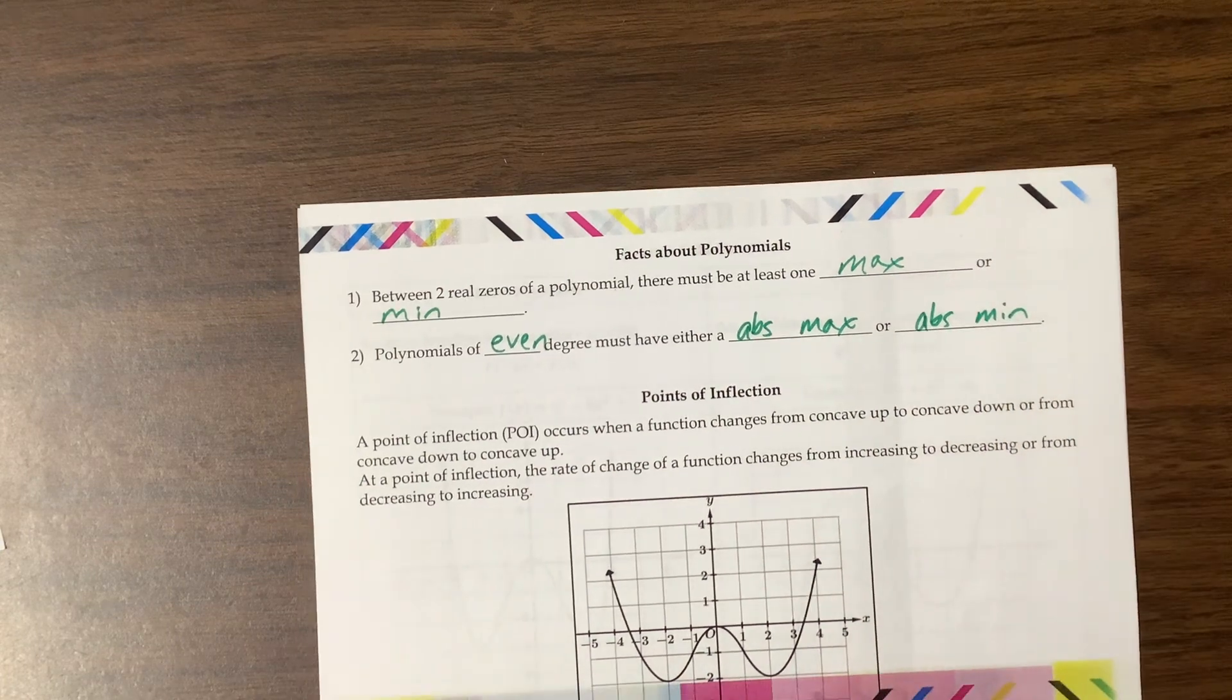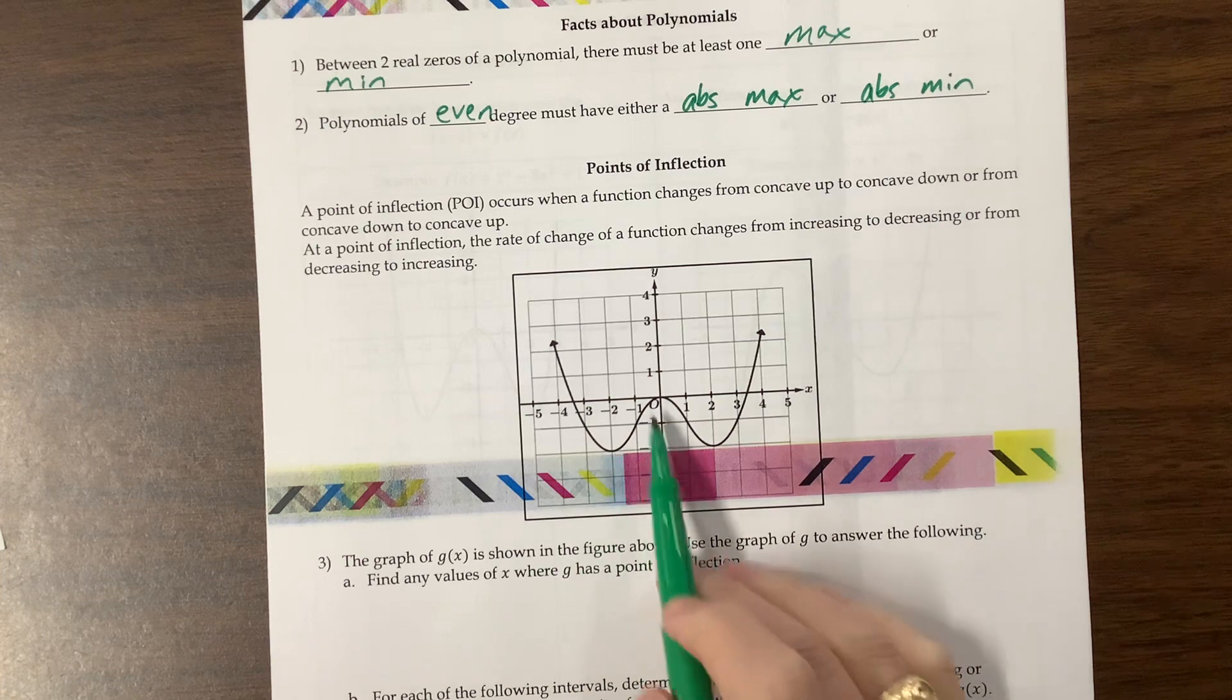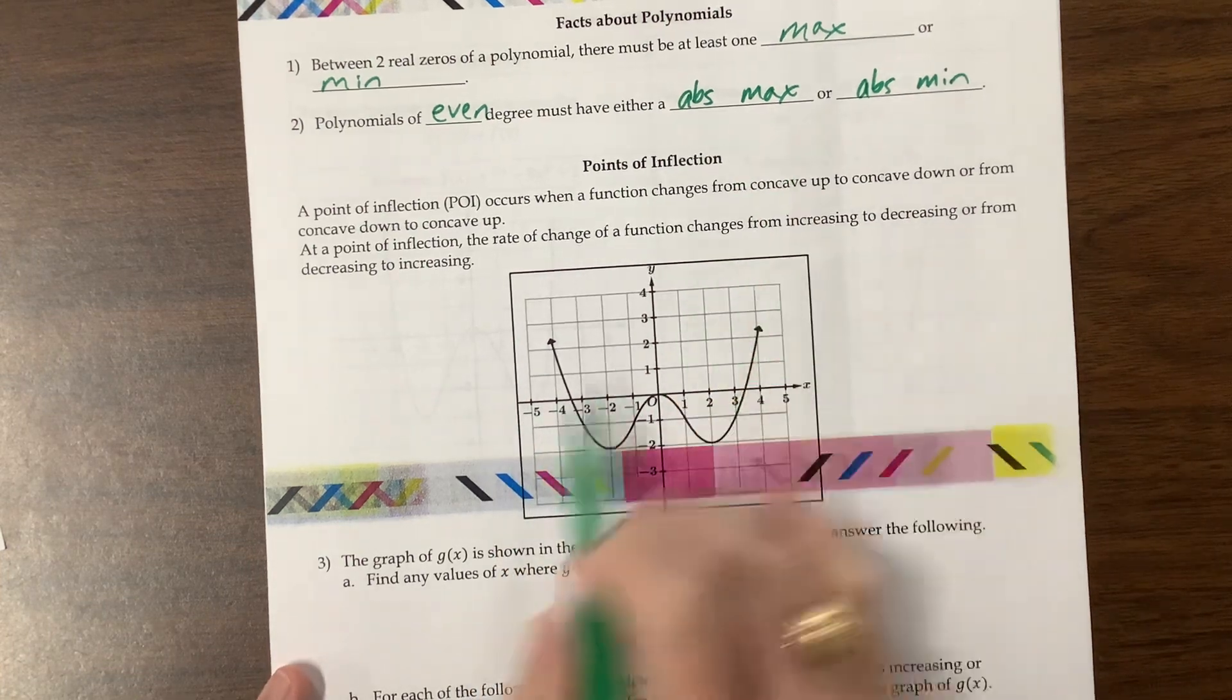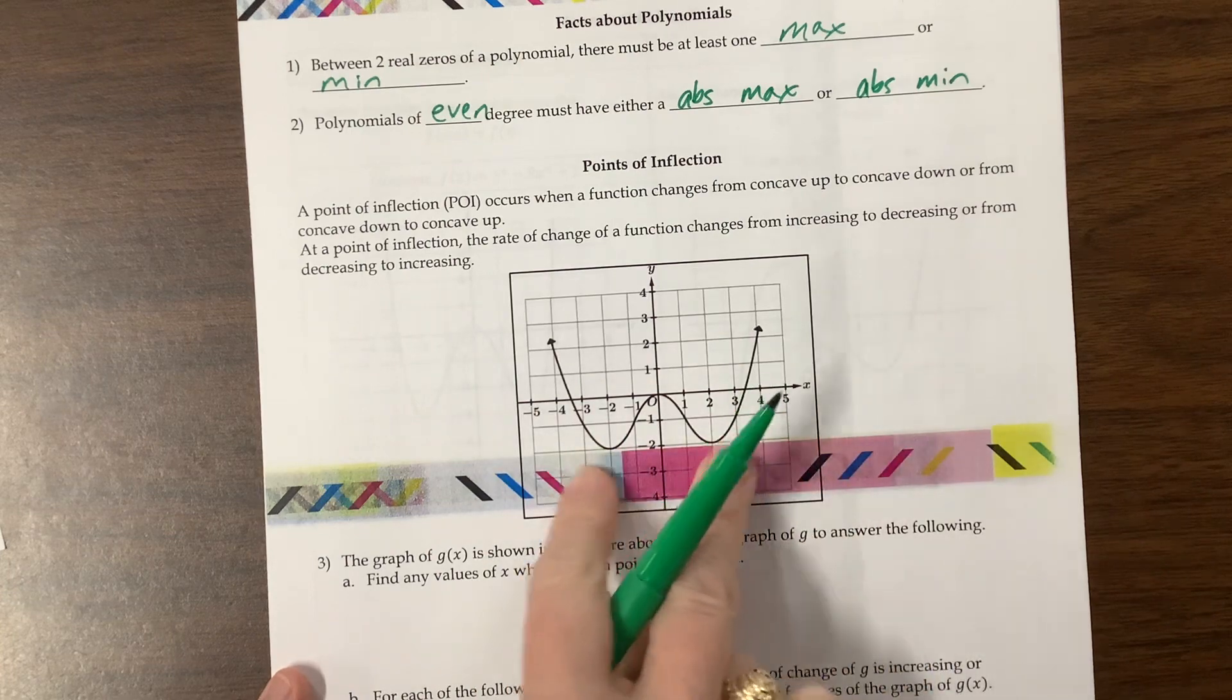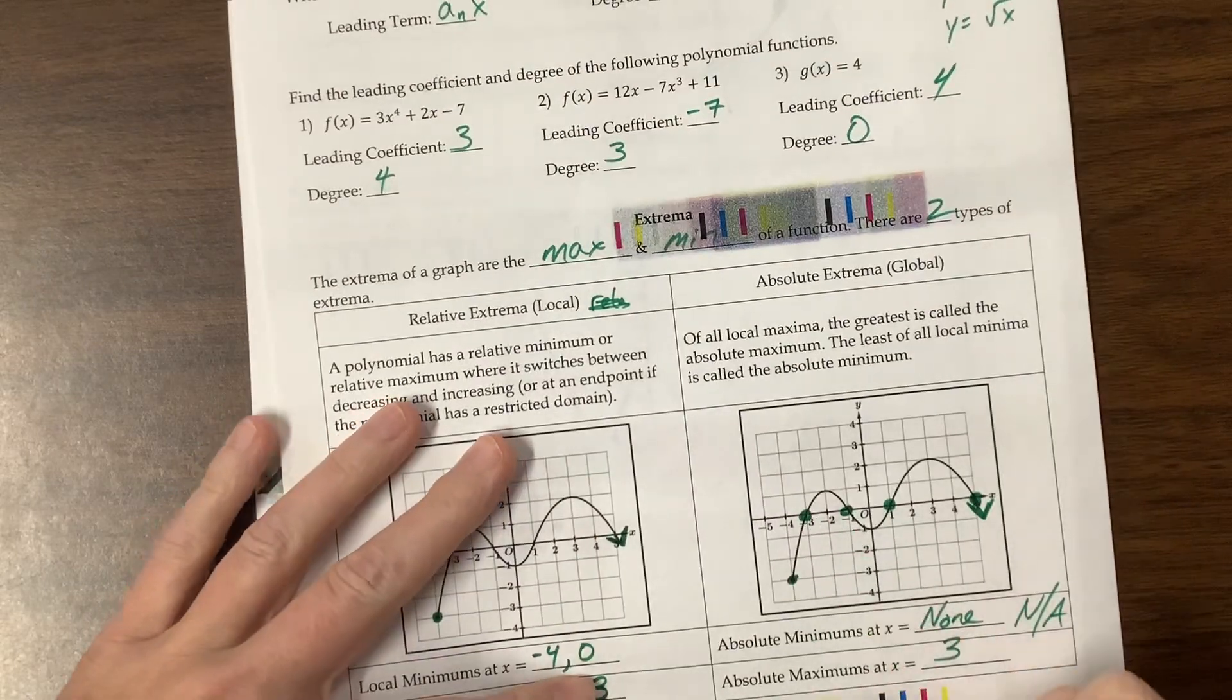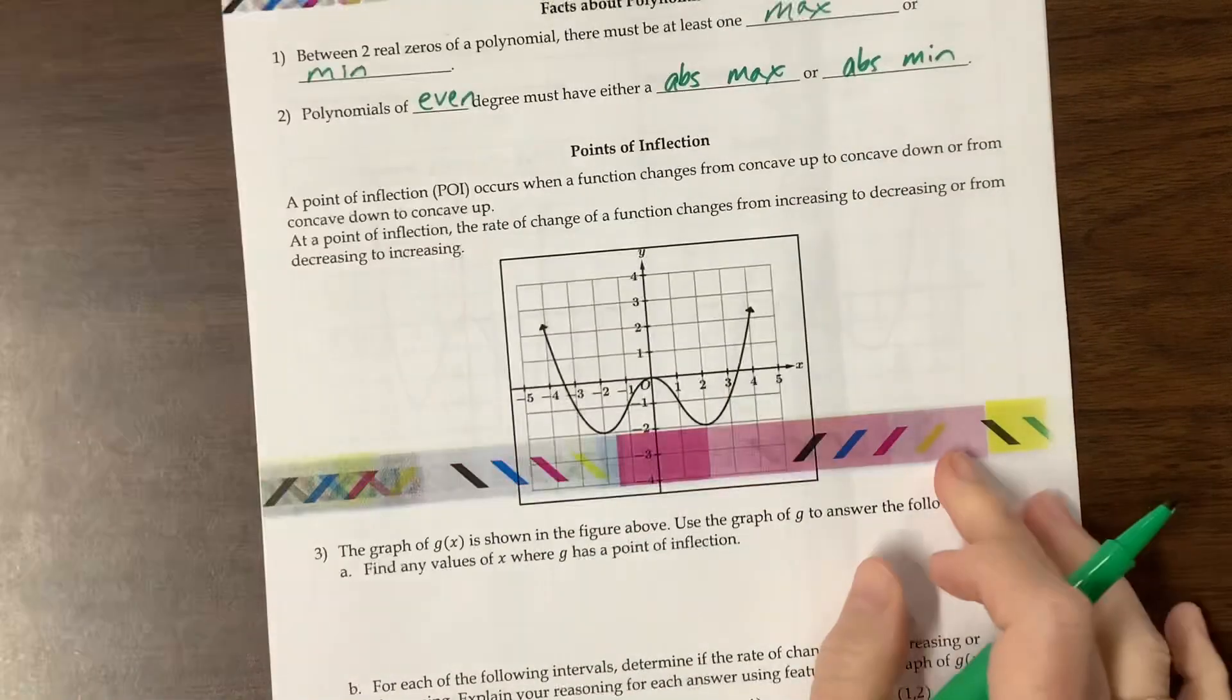So between two real zeros of a polynomial, there must be at least one max or min. Polynomials of even degree must have either an absolute max or an absolute min. So if it's an even degree, then it would look something like this, it's going to have a lowest value, and now that lowest value could show up twice, but if it keeps going up, so this would have an absolute minimum value. If it's going something like this and going, say it's going down forever here, this would have an absolute maximum value.